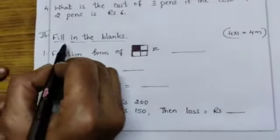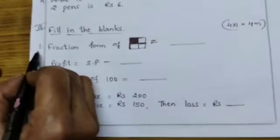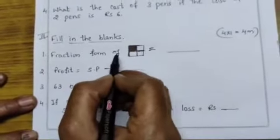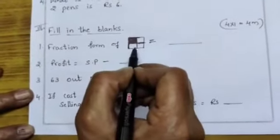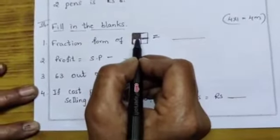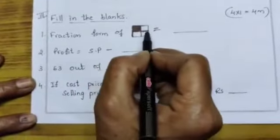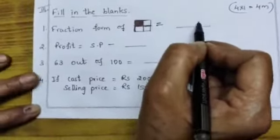Third question, fill in the blanks. First bit, fraction form of, children this is, I draw a square, 4 parts I divided, 1 part I shaded. So this you have to write it in fraction form in the blanks.